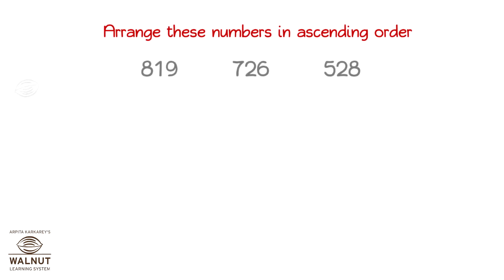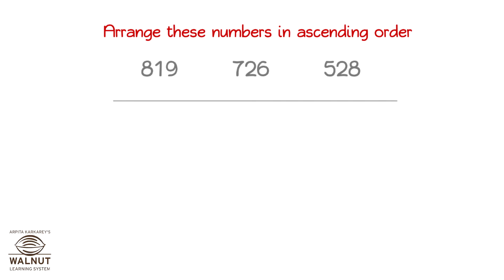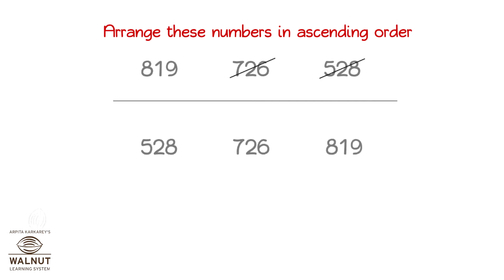Now, let us arrange these numbers in ascending order. You pick the smallest number and place it first. Then the next smallest and then the last one. So, we get the numbers in ascending order.